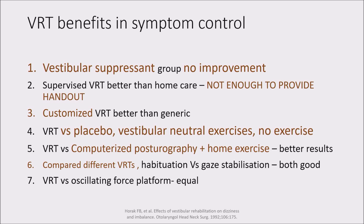The motion sensitivity quotient can be used. VRT versus placebo, neutral exercise, and no exercise — VRT came up trumps. VRT versus computerized posturography along with Cawthorne-Cooksey at home had a better result, but this is difficult to achieve. Different VRTs — gaze stabilization versus spinal exercises — everything worked. Bottom line: start VRT as soon as possible.